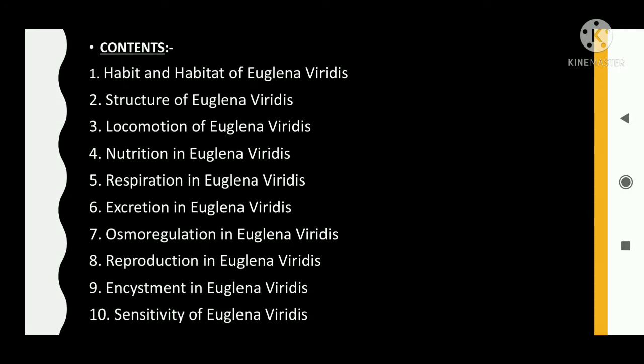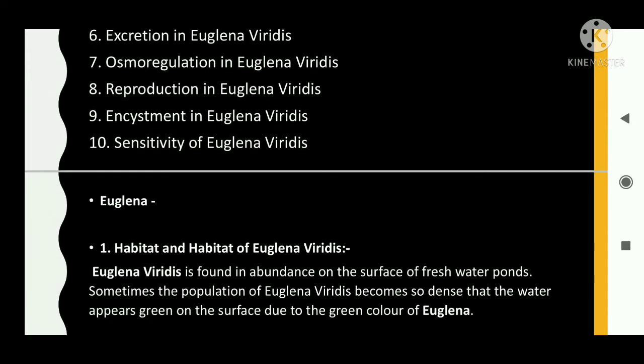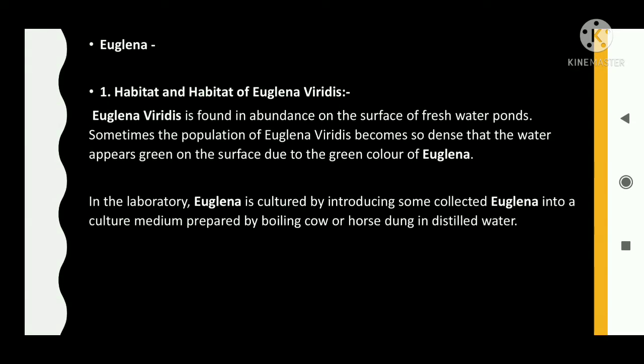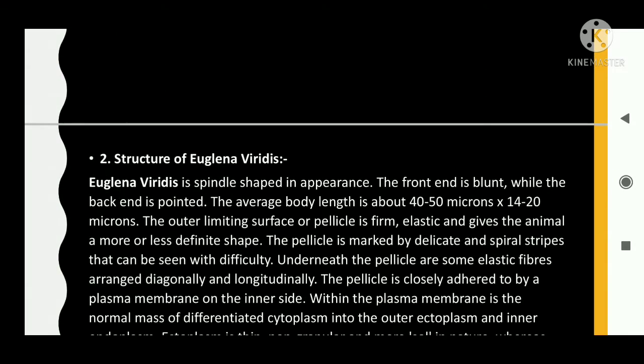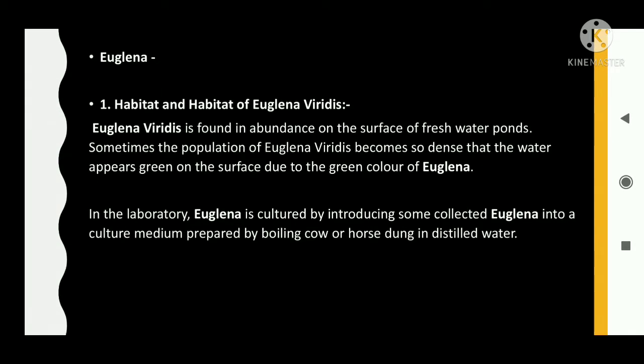The first topic is Habit and Habitat of Euglena viridis. Euglena viridis is found in abundance on the surface of freshwater ponds. Sometimes the population becomes so dense that the water appears green on the surface due to the green color of Euglena. In the laboratory, Euglena is cultured by introducing collected Euglena into a culture medium prepared by boiling cow or horse dung in distilled water.